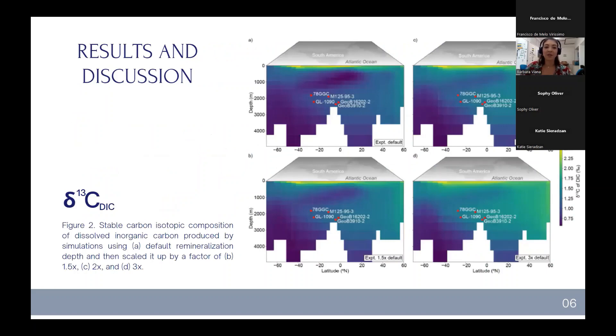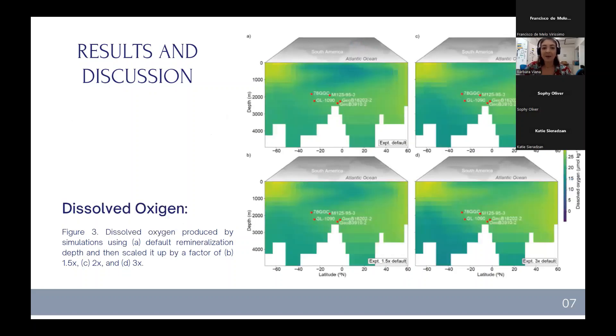Here were our first results in images. This one was the experiment with the default remineralization depth. This one is 1.5, 2, and 3 times. And in red, we have marked the marine sediment cores. What we observed was, the more we increase the remineralization depth, the more we increase the carbon-13 isotopic signature as well. Same thing happened with dissolved oxygen, which was the tracer we used.